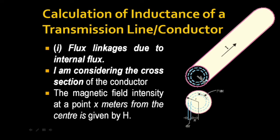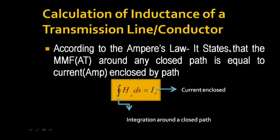I am considering the conductor of radius r, and at a distance x from the center I am considering a small element of length dx. At this point x, I am considering the magnetic field intensity H. According to Ampere's law, the MMF around any closed path is equal to the current enclosed by the path. In general expression: the closed integral of H·ds is equal to Ix.